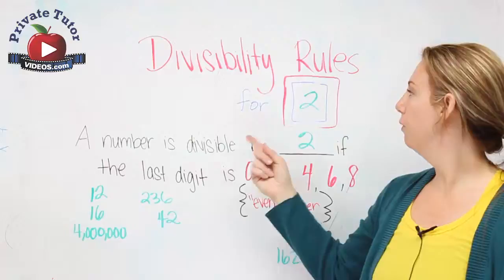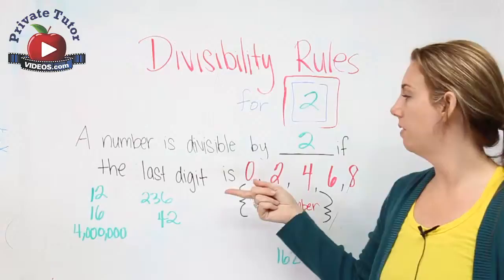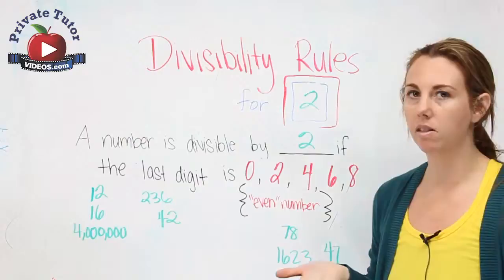Divisibility rules for 2. A number is divisible by 2 if the last digit is 0, 2, 4, 6, or 8. In other words, if it's an even number.